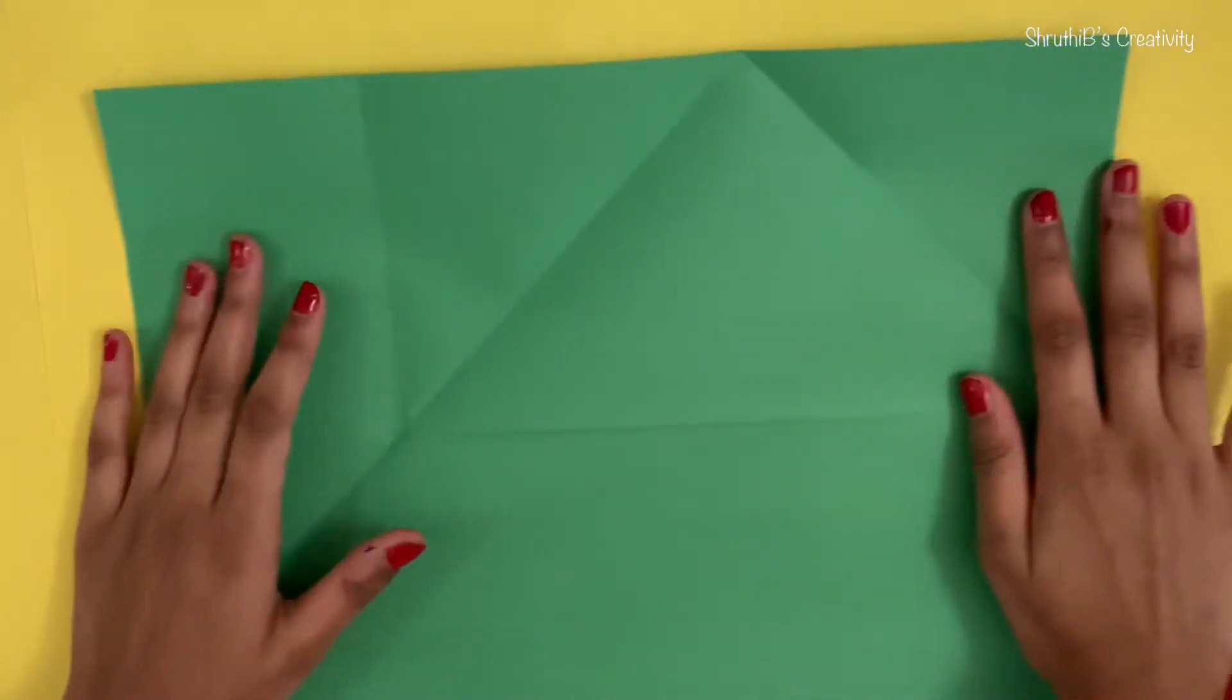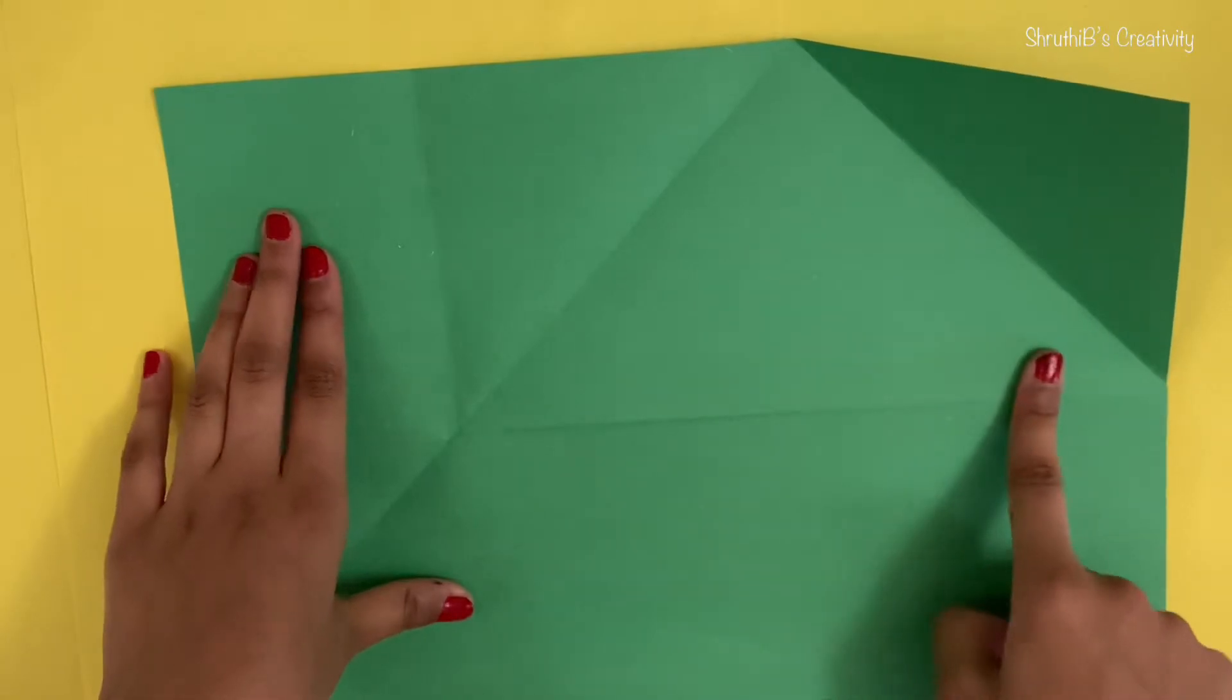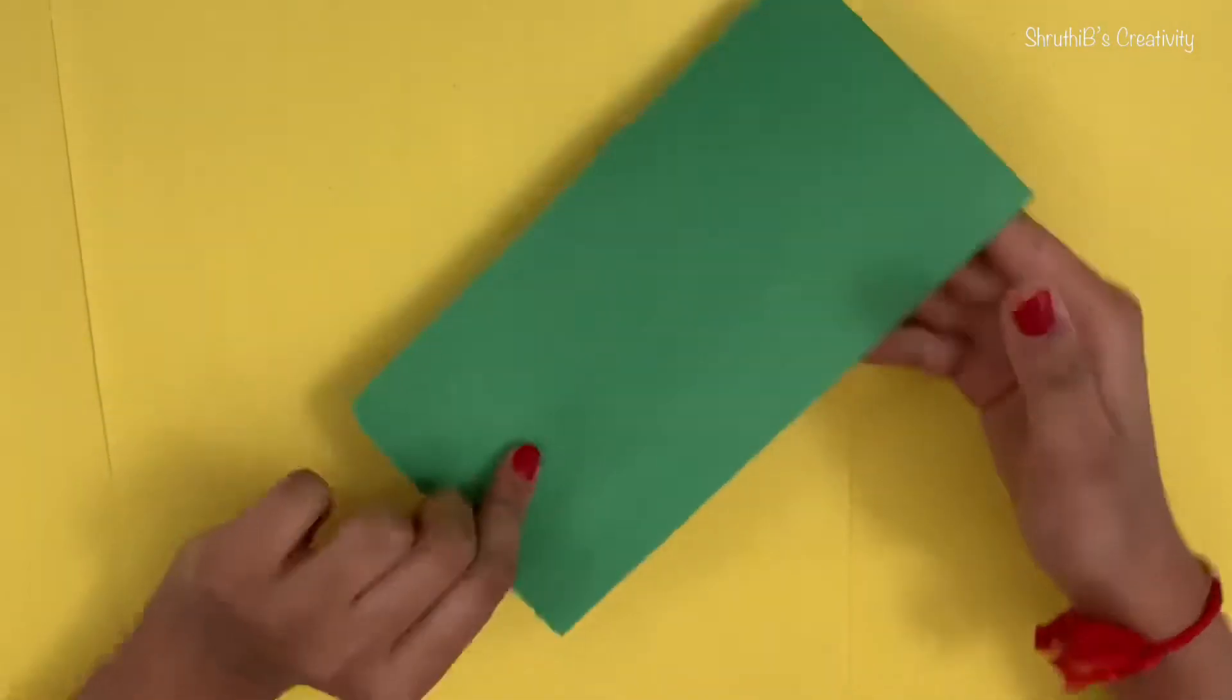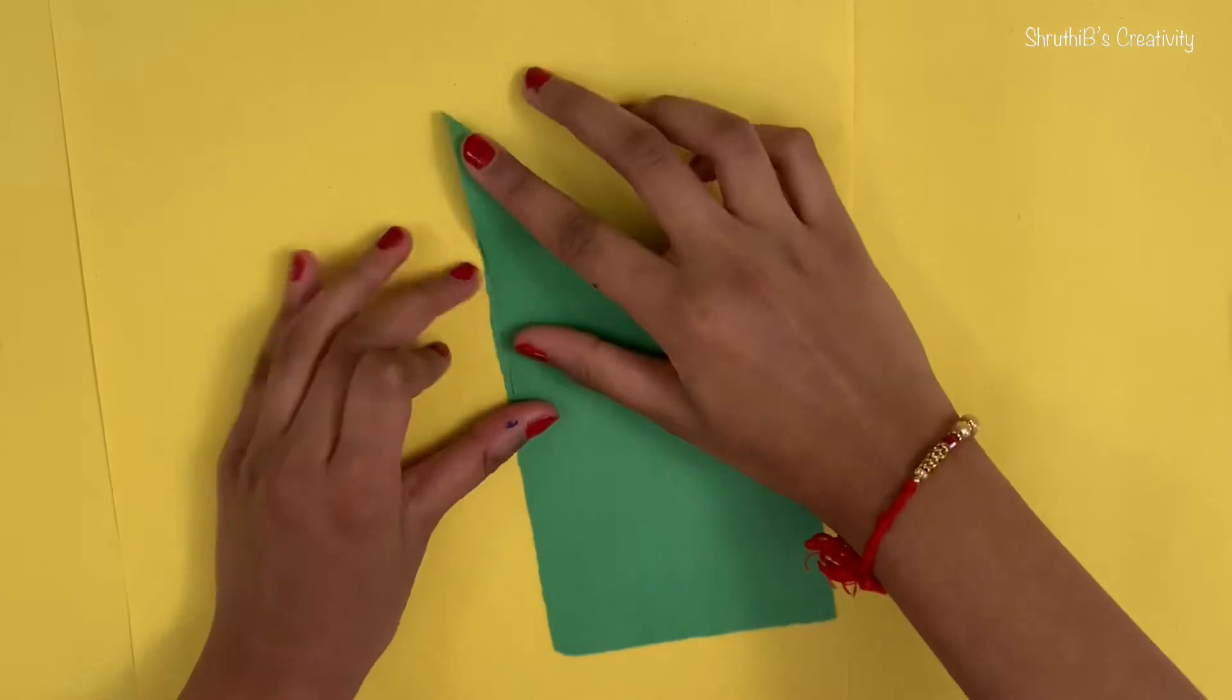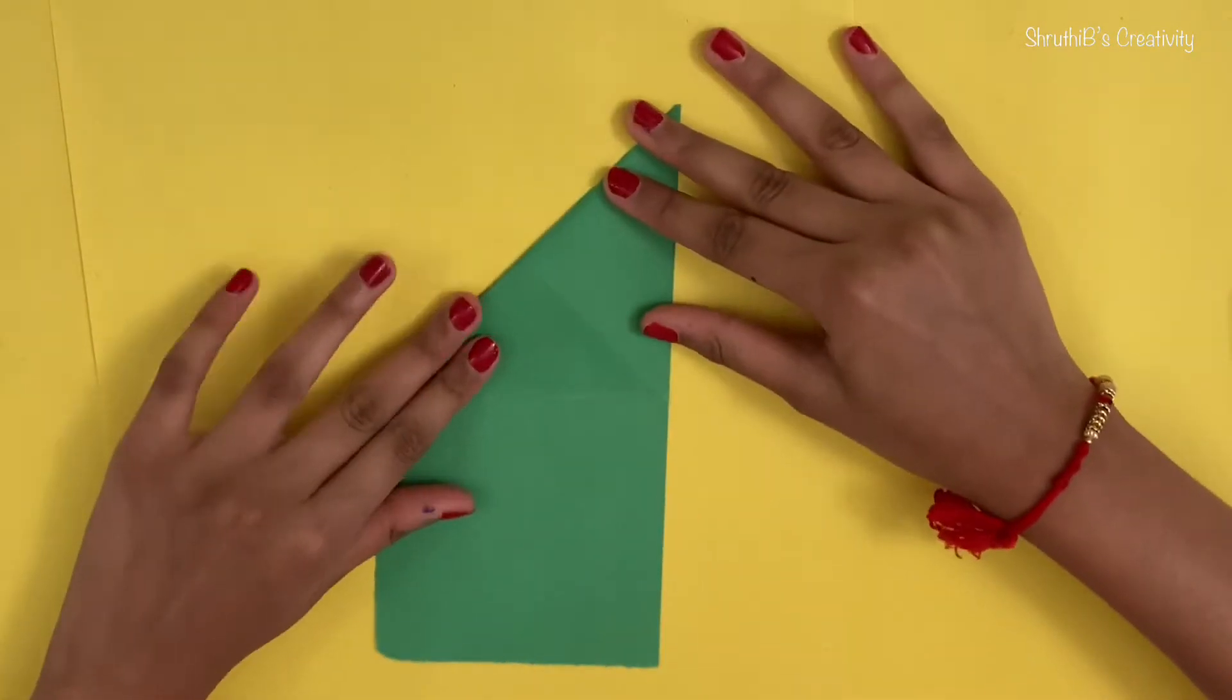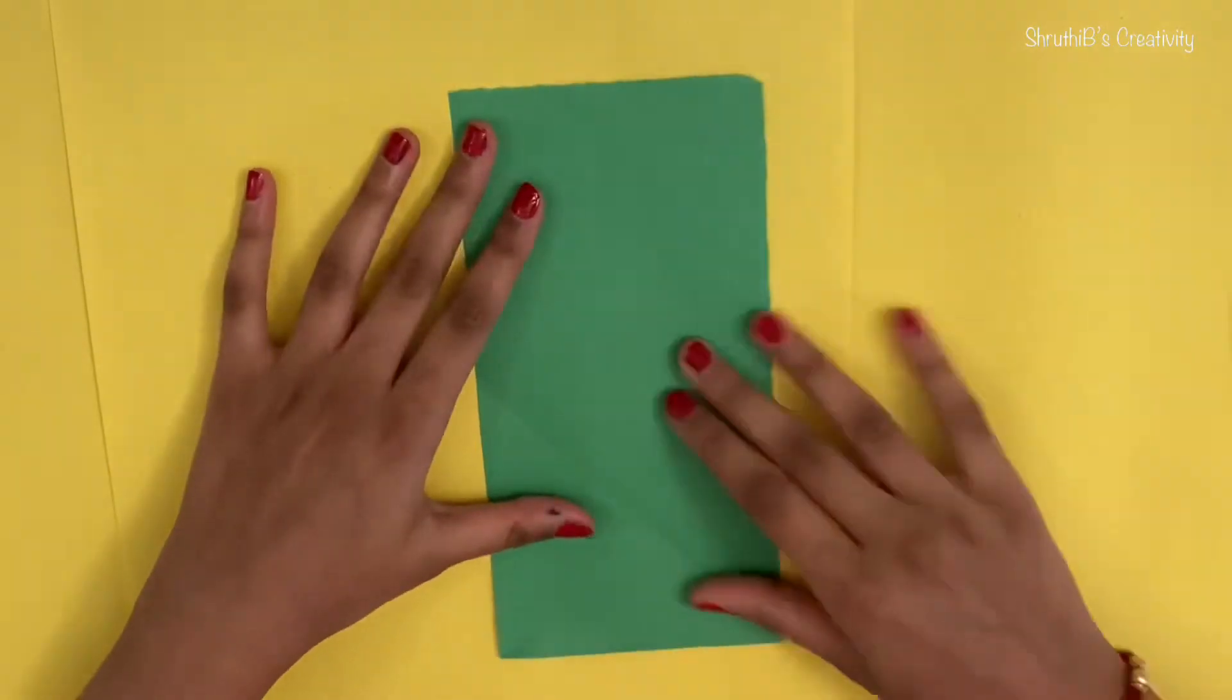Now we know how to cut it. So we have this whole rectangle to cut. So let's get started with this. So first, you're going to have to fold. Open it up and fold it again. Tilt and do the same.